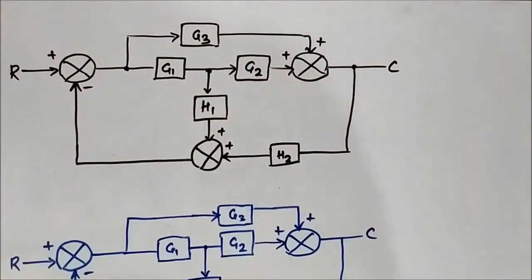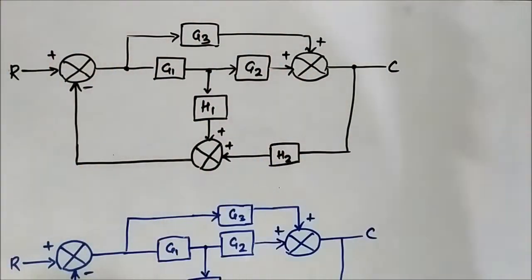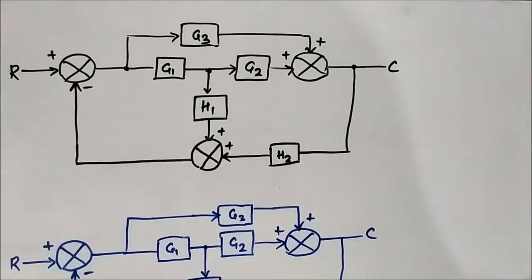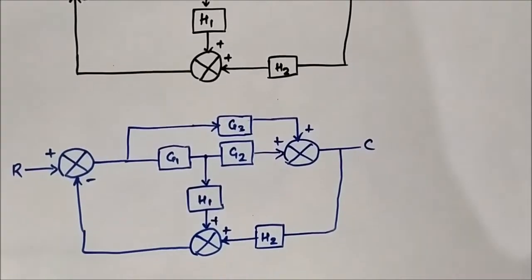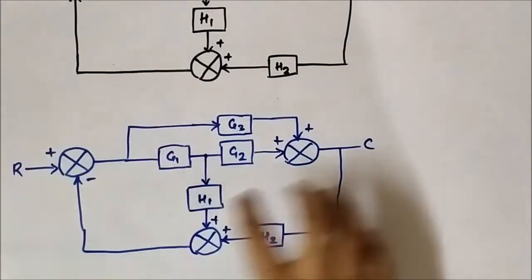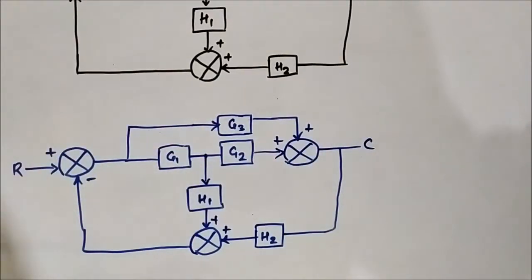Here is the block diagram, the question in black ink. We will simplify this and reduce it into simple form. Here we will make the changes.